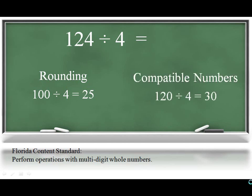Or they could realize that 124 has 12 tens, which is compatible with 4, and divide 120 or 12 tens by 4, which would give them 3 tens or 30 as an estimate. Remember, the purpose of an estimate is to quickly get a ballpark figure for their solution in order to check its reasonability.